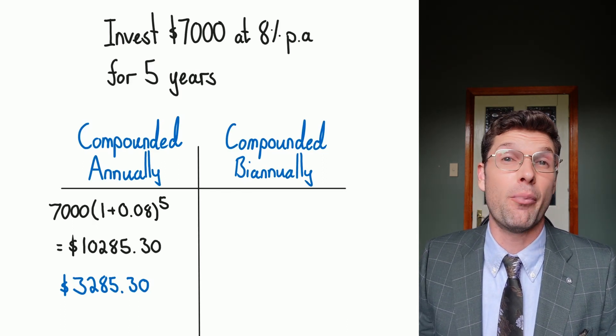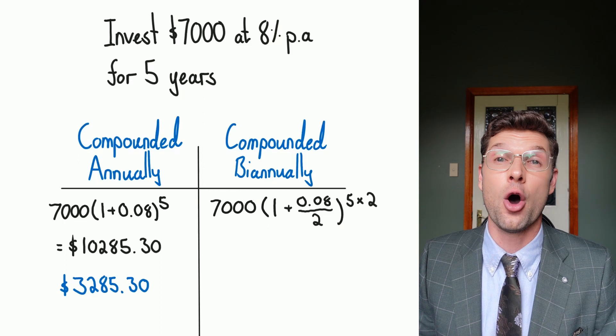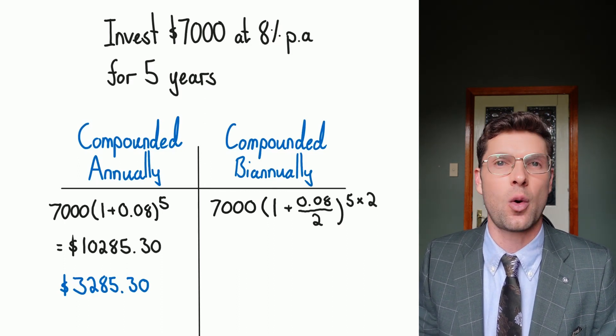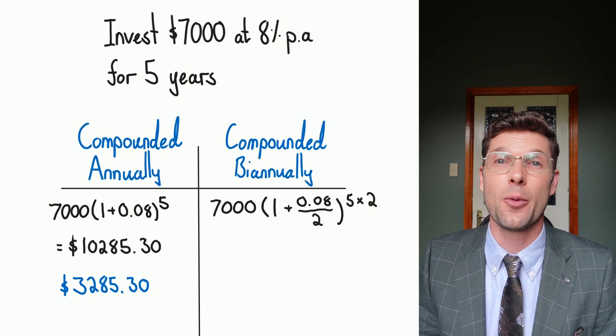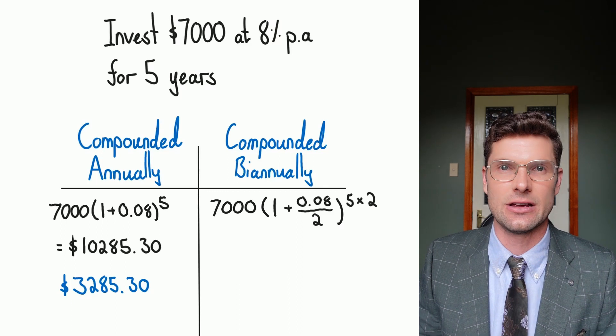So now if I look at the biannual one, I've got my $7,000 still, 1 plus 0.08, and I'm going to divide that by 2 because I'm getting paid out twice per year. And then the power that goes at the top is 5 multiplied by 2, because there's 10 payment periods.